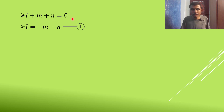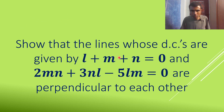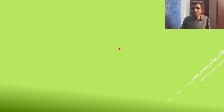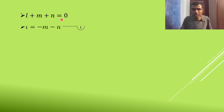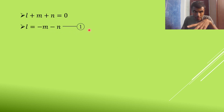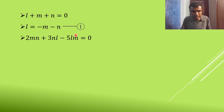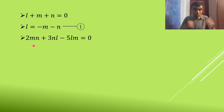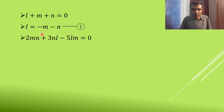The two equations are: L + M + N = 0 (first equation) and 2MN + 3NL − 5LM = 0 (second equation). From the first equation, I write L = −M − N. Mark it as equation 1. Now, put L = −M − N into the second equation.